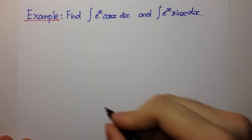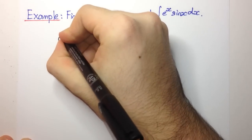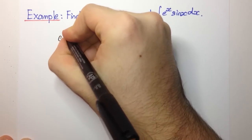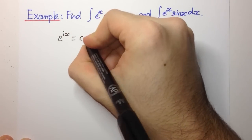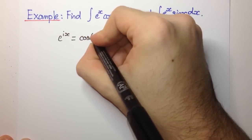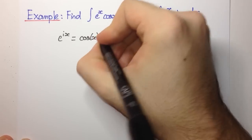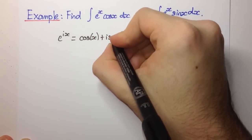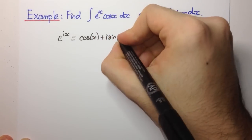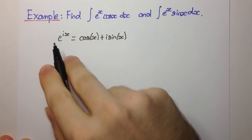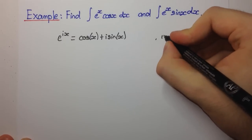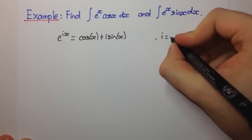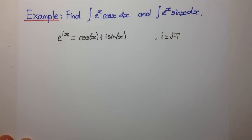Euler's theorem says that e to the power ix equals cos(x) plus i·sin(x), where i is the imaginary unit, which is the square root of minus 1.